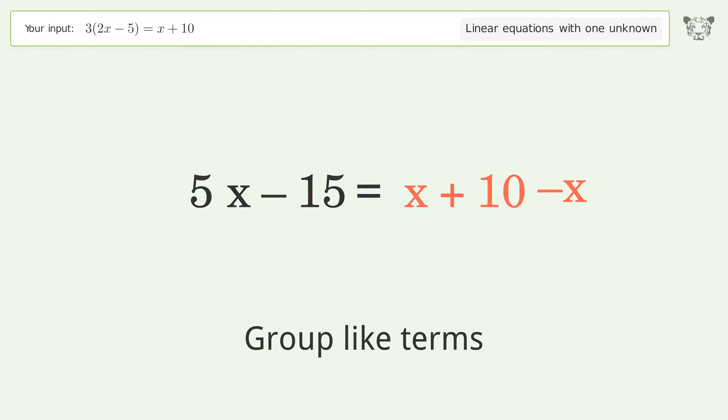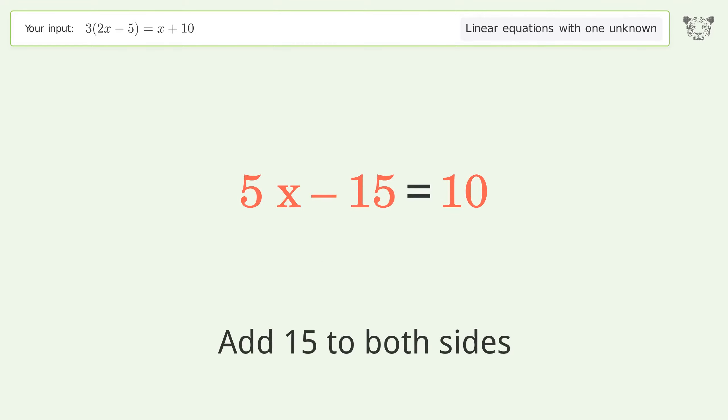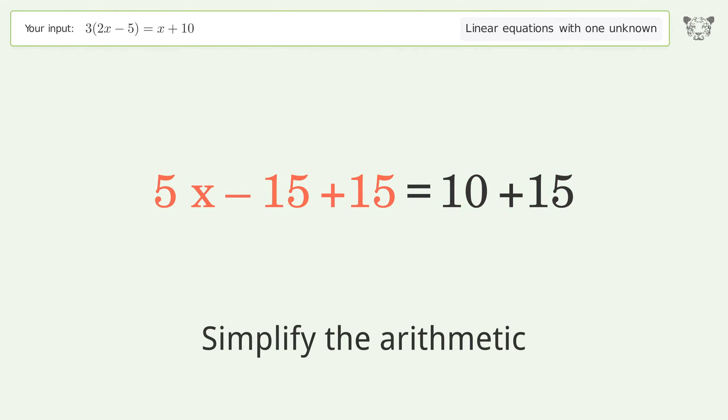Group like terms. Simplify the arithmetic. Group all constants on the right side of the equation. Add 15 to both sides. Simplify the arithmetic.